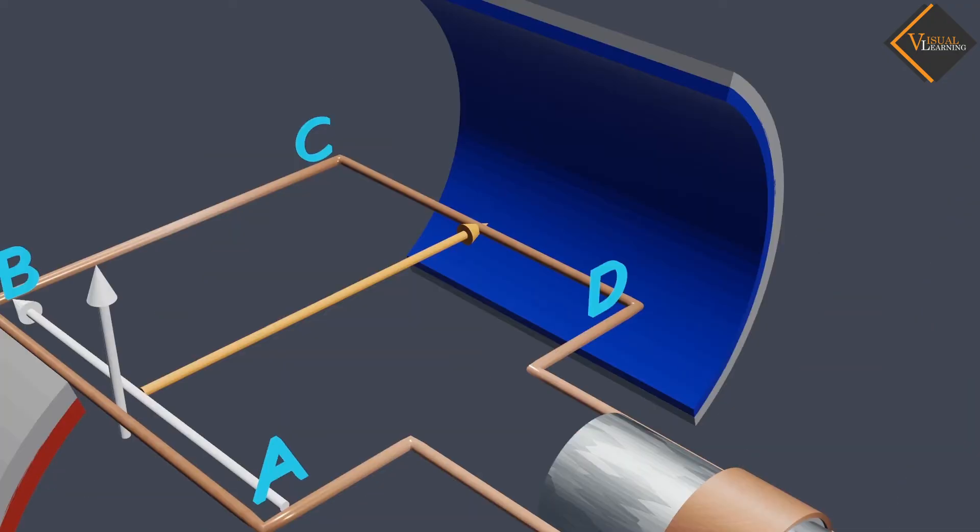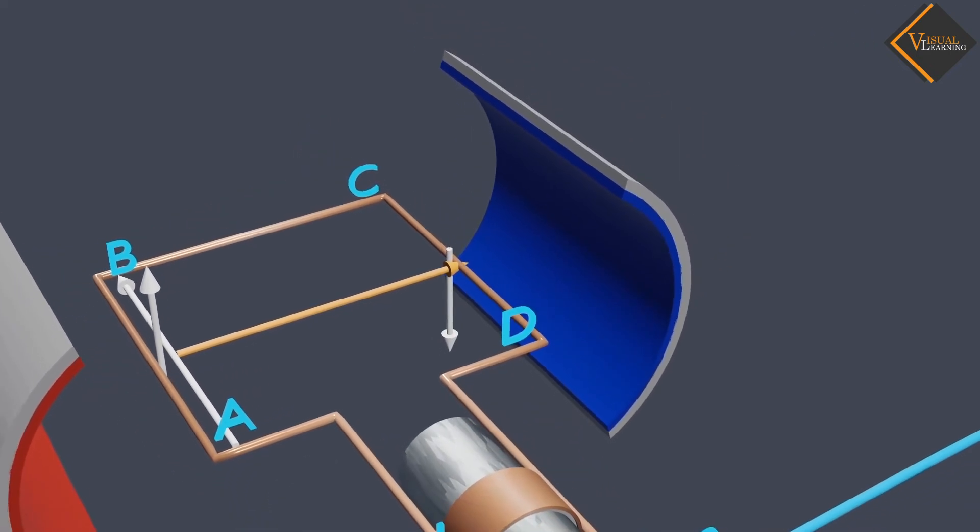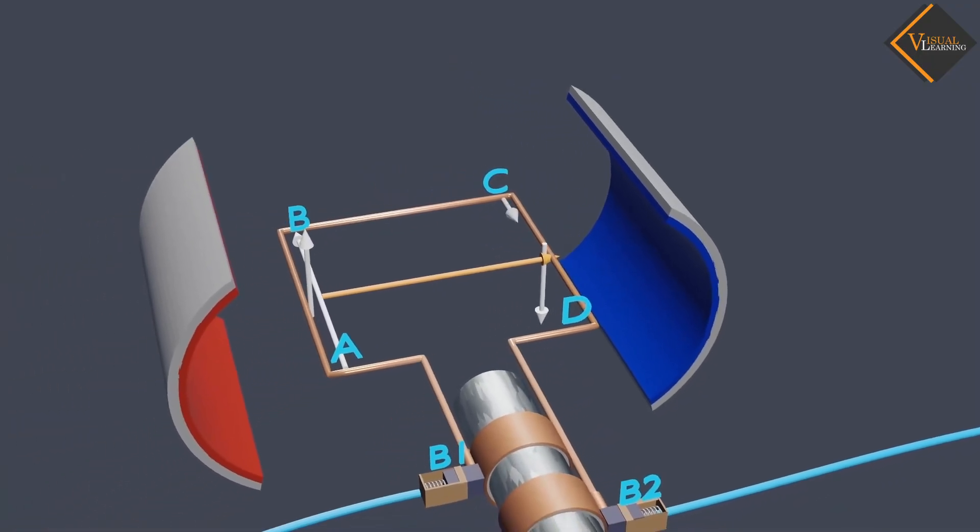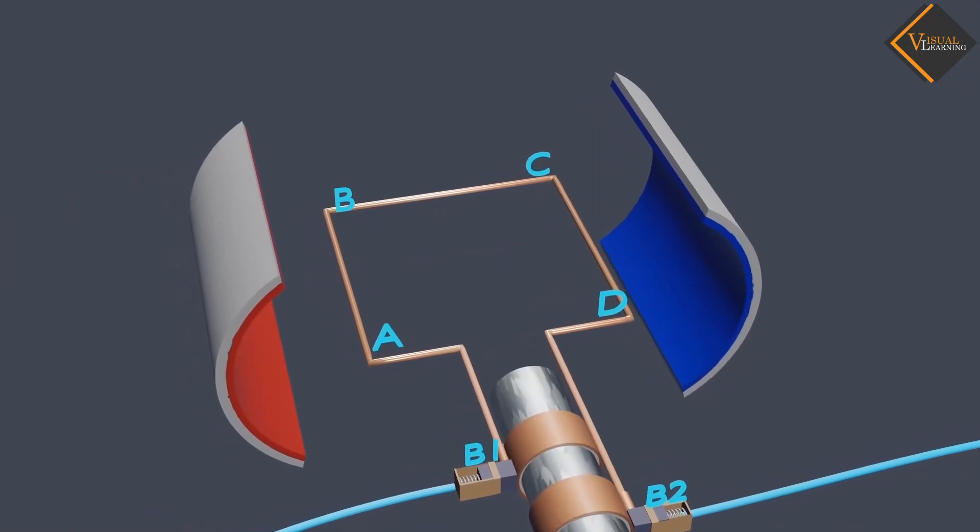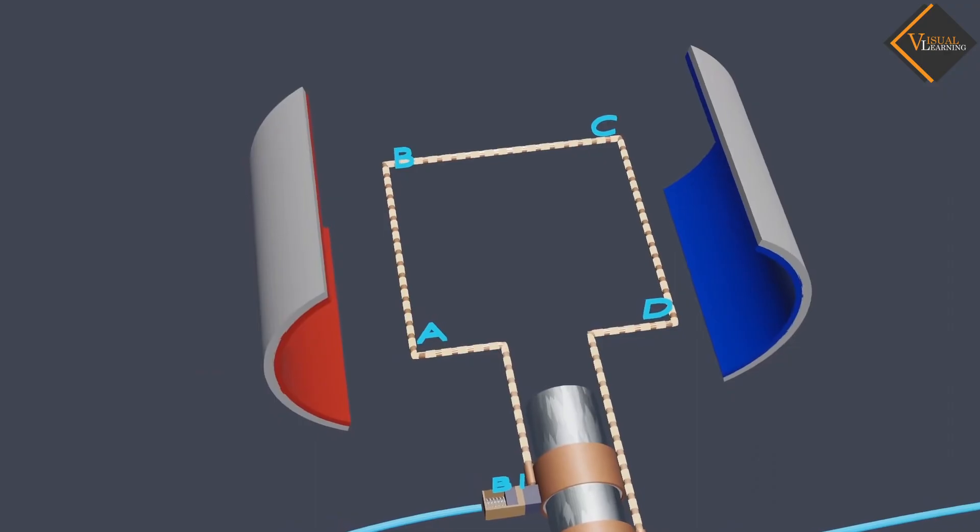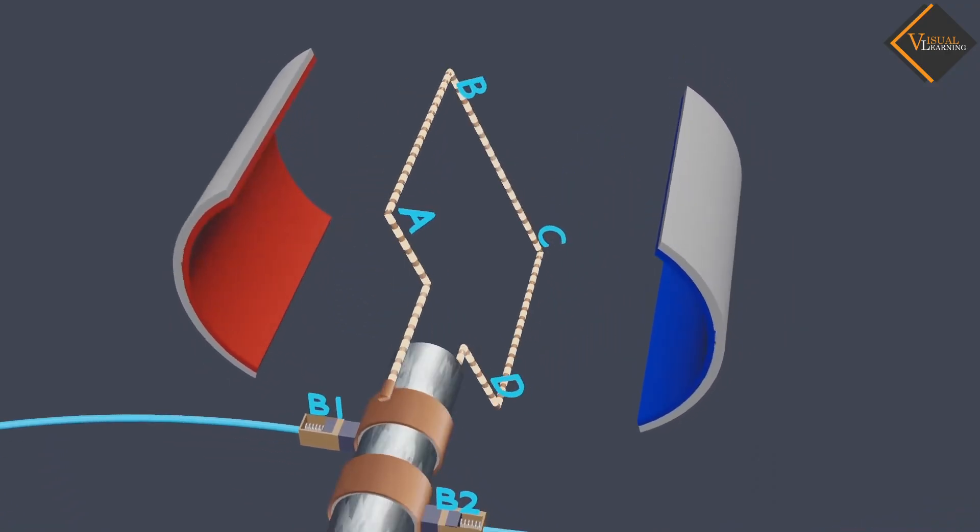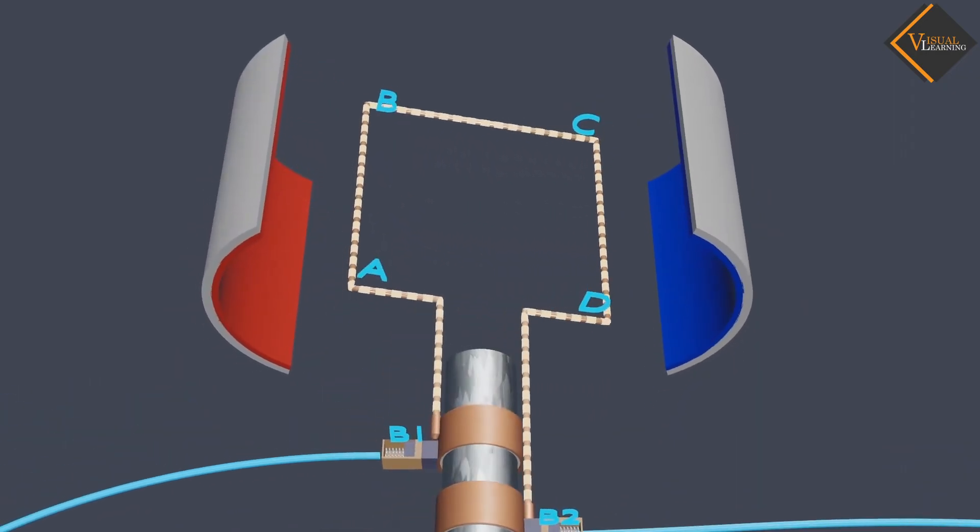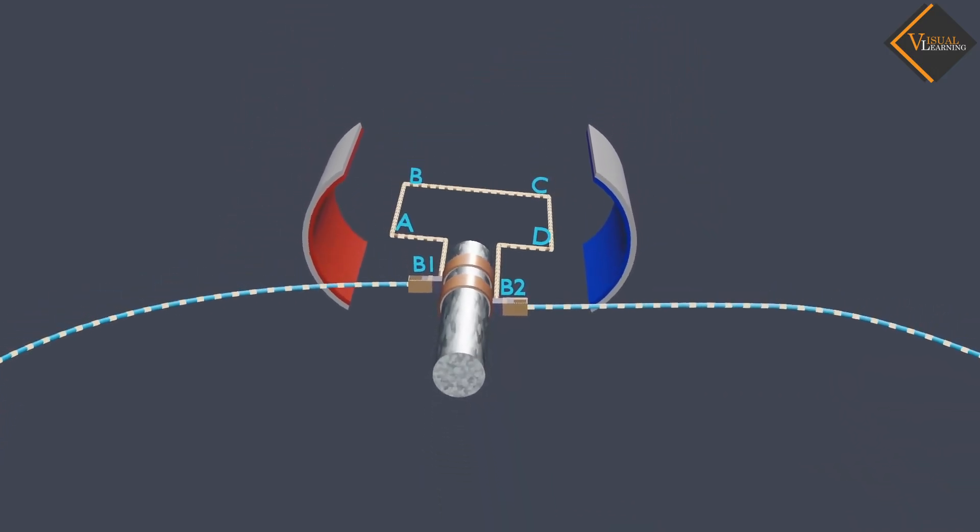Similarly, by applying Fleming's right-hand rule on segment CD, the force is acting downward and magnetic field is acting left to right. Then the current will be C to D. The induced currents are set up in these arms along the directions AB and CD. Thus, an induced current flows in the direction ABCD. The current in the external circuit flows from B2 to B1.